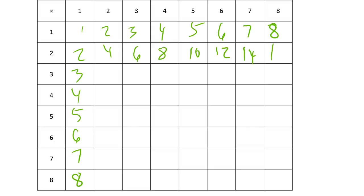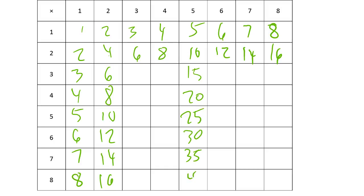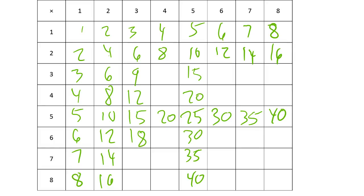Continuing the twos going down the column: two, four, six, eight, ten, twelve, fourteen, sixteen. The fives are going to be the next easiest: five, ten, fifteen, twenty, twenty-five, thirty, thirty-five, forty — and the same going across. Now we've got the threes: three, six, nine, twelve, fifteen, eighteen, twenty-one, twenty-four.